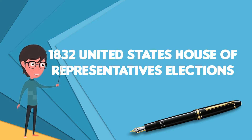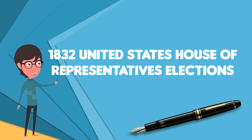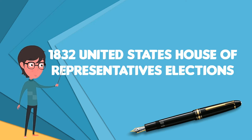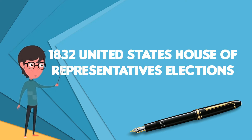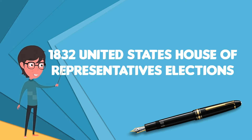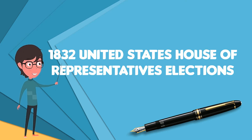Economic issues were key factors in this election. Southern agricultural districts reacted angrily to passage of the tariff of 1832, which led to the nullification crisis.